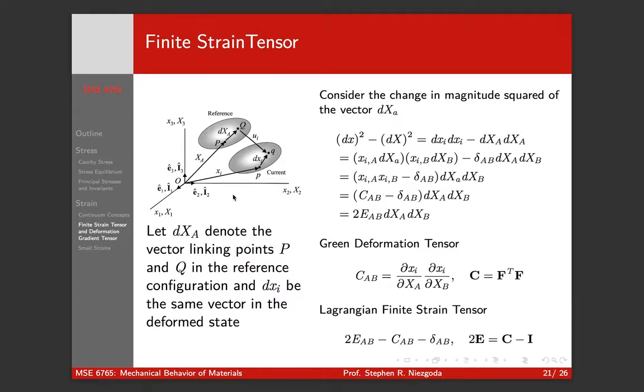Okay, so we've gone through and developed our kinematics. We've described our motion in terms of the undeformed or reference configuration and our current or deformed configuration. We defined displacements with respect to those configurations and came up with two tensors that are important: the displacement gradient tensor and the deformation gradient tensor.